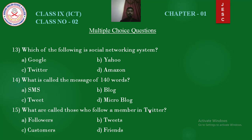Question number 13: Which of the following is a social networking system? Options: Google, Yahoo, Twitter, Amazon. Answer is Twitter. Question number 14: What is a message of 140 words called? Options: SMS, blog, tweet, microblog. Answer is tweet.